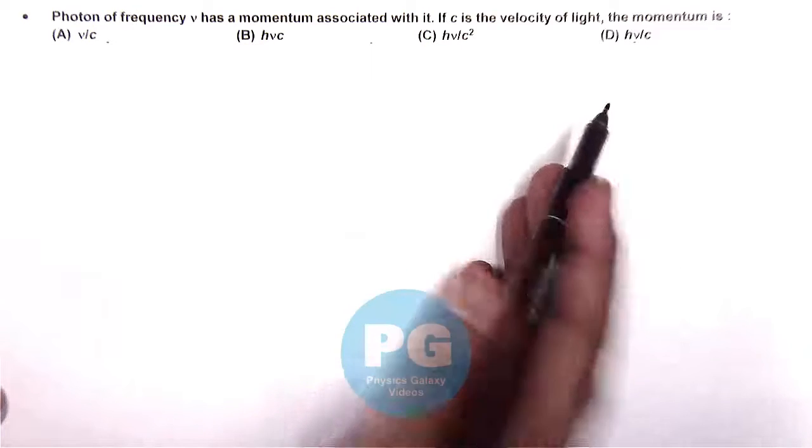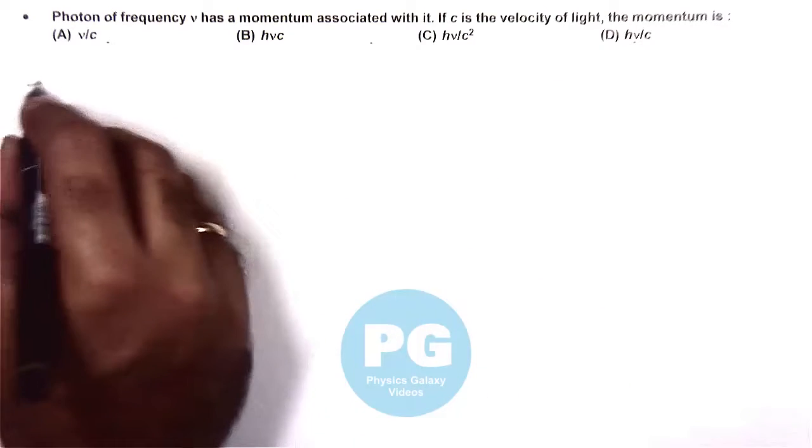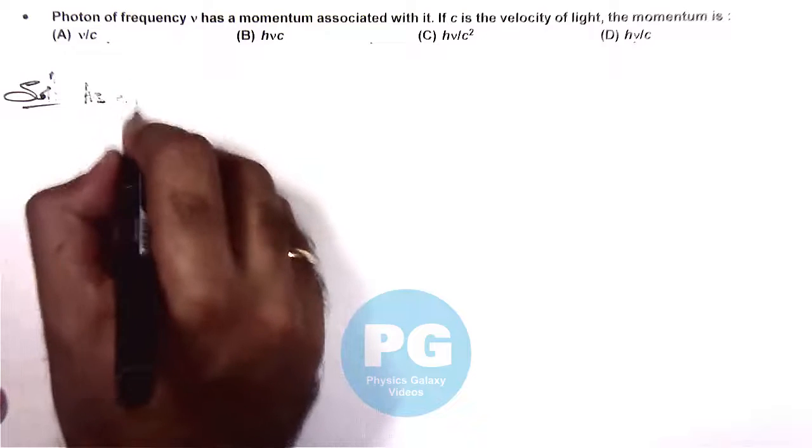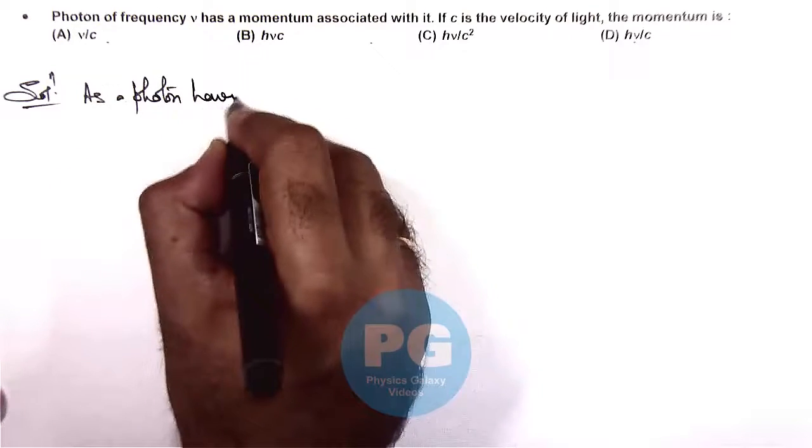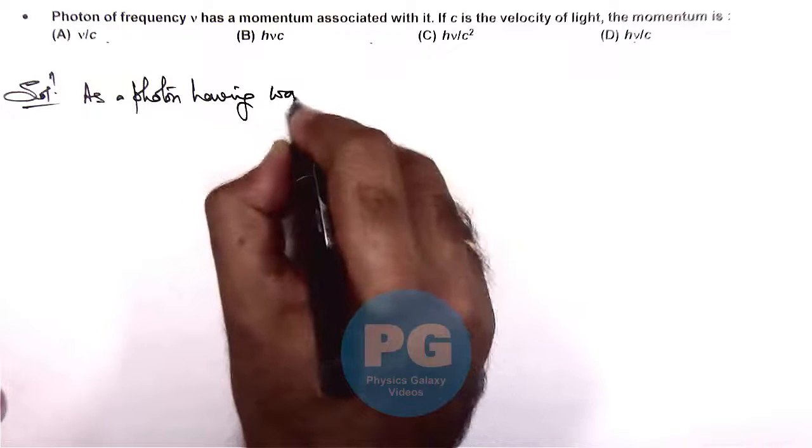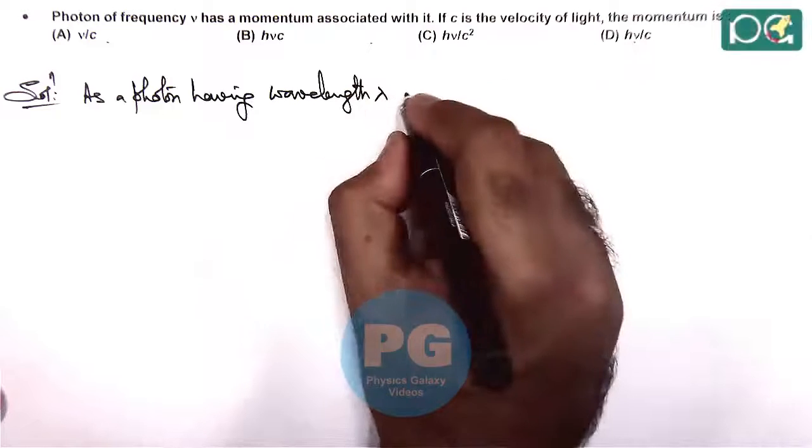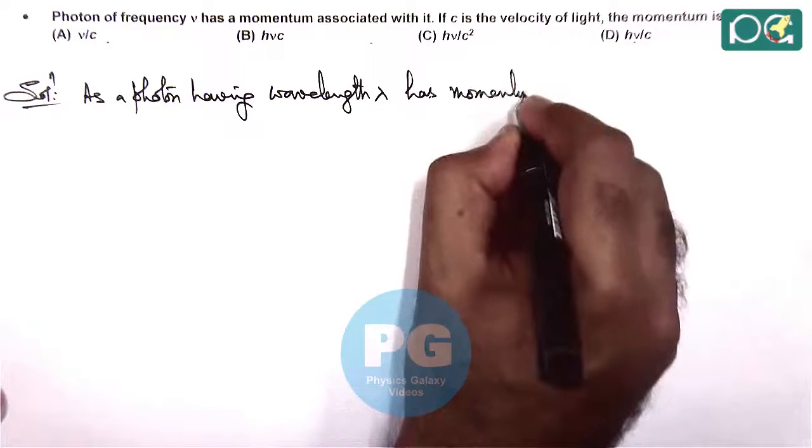One thing you can check with dimensions of the four options, or directly we can write as a photon having wavelength lambda has momentum associated with it.